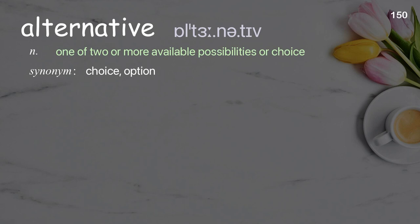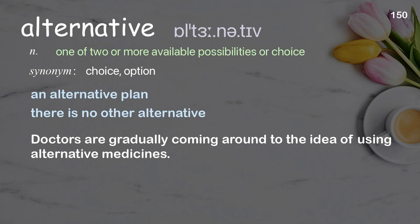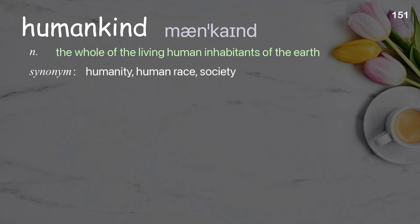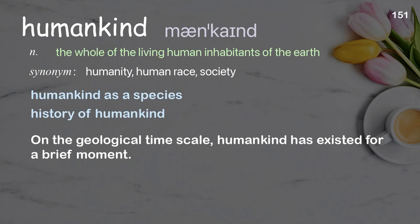Alternative: one of two or more available possibilities or choices. Examples: an alternative plan; there is no other alternative. Doctors are gradually coming around to the idea of using alternative medicines. Humankind: the whole of the living human inhabitants of the earth. Examples: humankind as a species; history of humankind. On the geological time scale, humankind has existed for a brief moment.